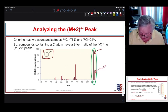This is our M plus 2 peak, and it's significantly bigger. If we did the calculation, we would actually find out that the ratio of these two peaks is 76 to 24.